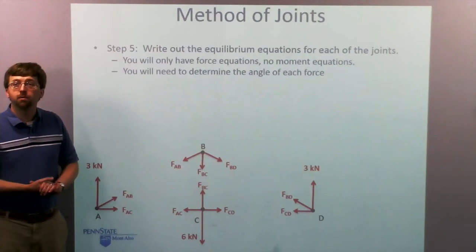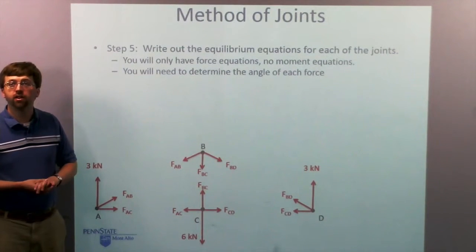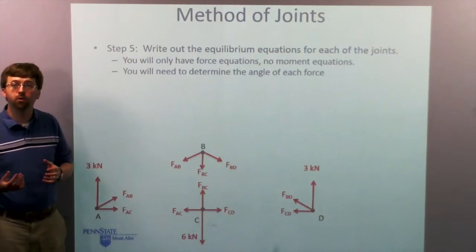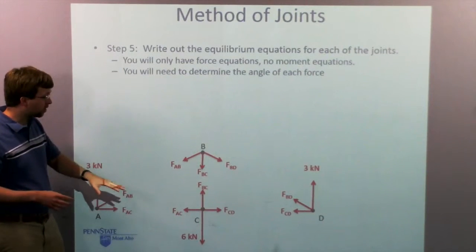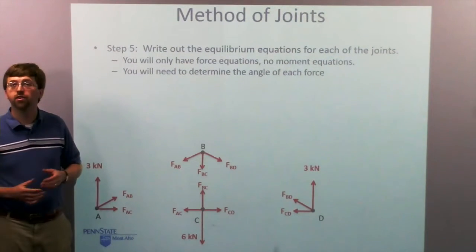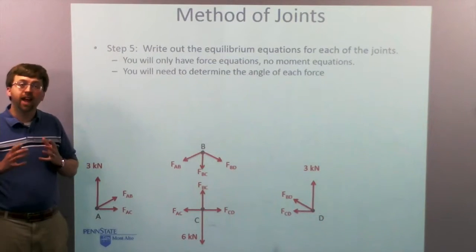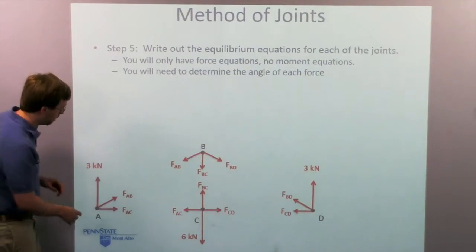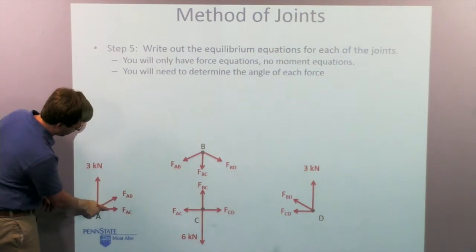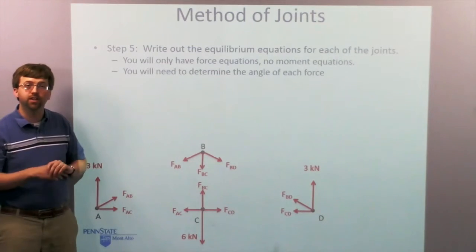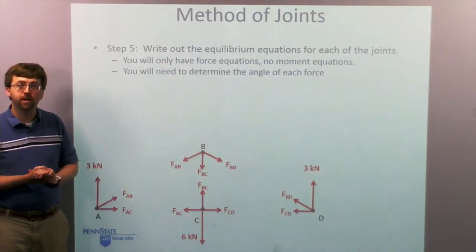So I write out the equilibrium equations for each of the joints. So you're only going to have force equations in here. We're assuming these are all particles. So no moments. And we're going to need to determine the angle of each force as well. This is just simple geometry. I need to figure out how far from horizontal is that force AB at the bottom there.